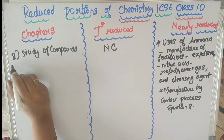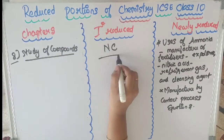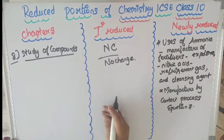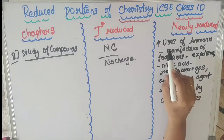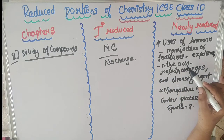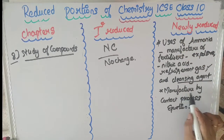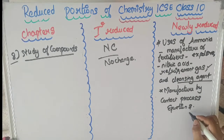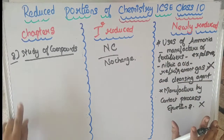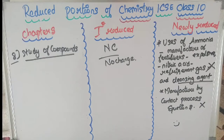In the eighth chapter, Study of Compounds, there was no change in the first reduction, but in the new reduction two topics are removed: the uses of ammonia — including manufacture of fertilizers, explosives, nitric acid, refrigerant gas, and cleansing agent — and the manufacture of sulphuric acid by the Contact Process equations.